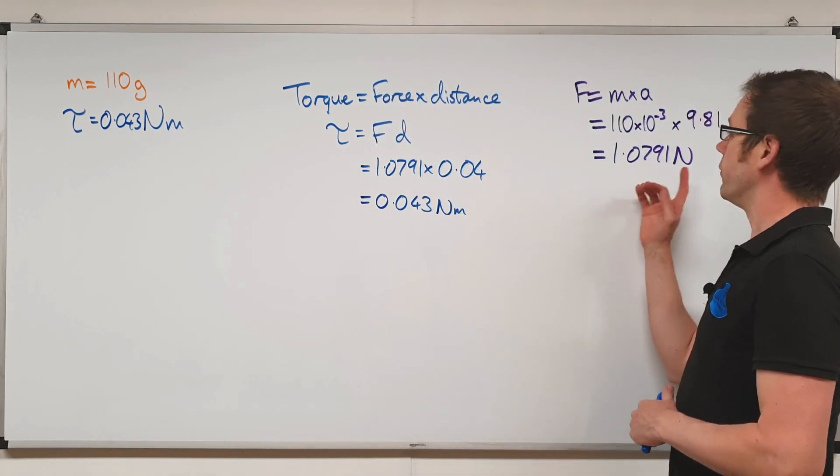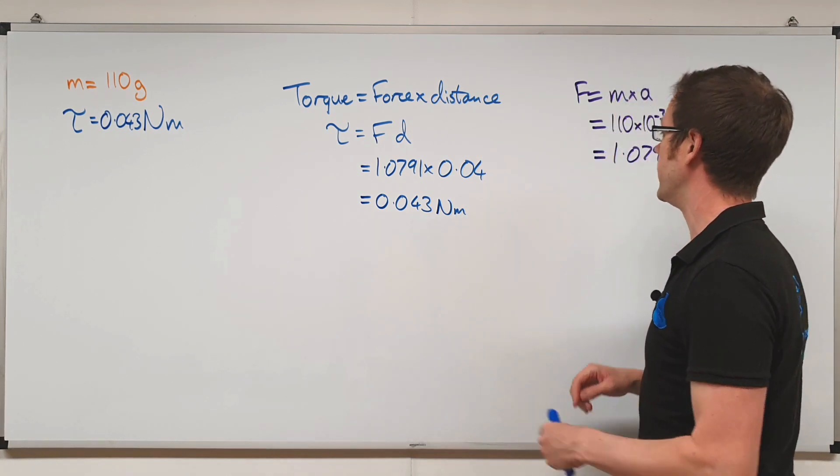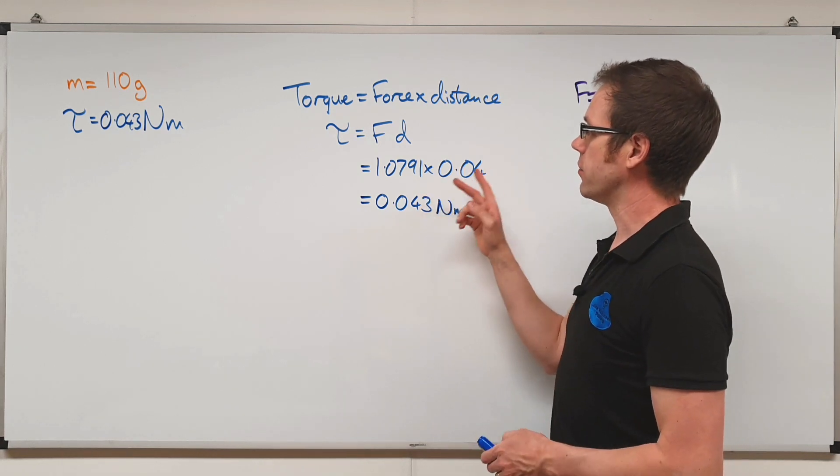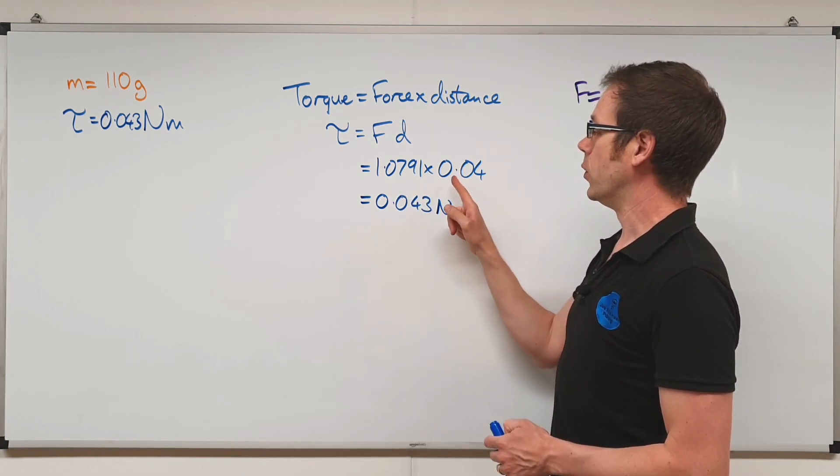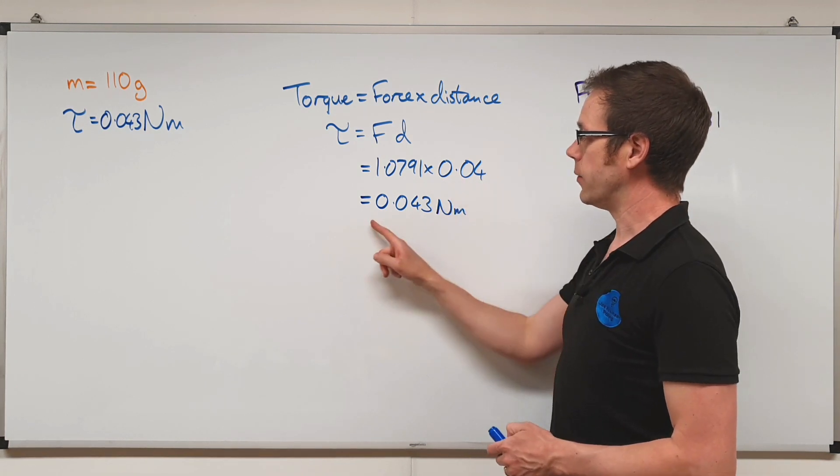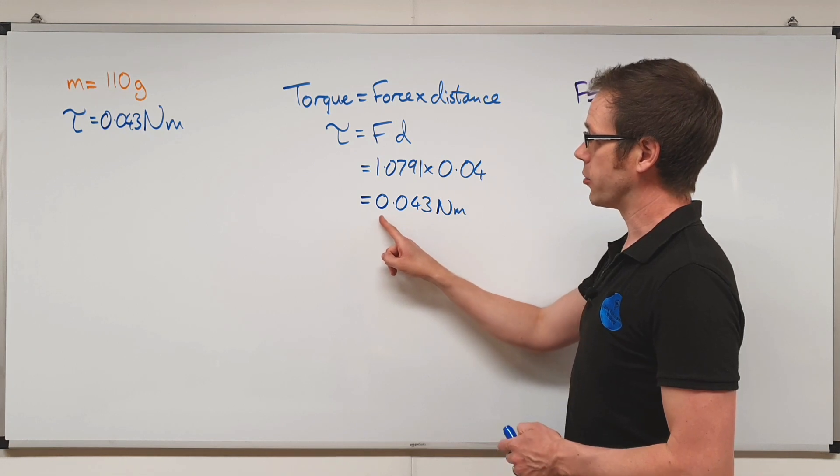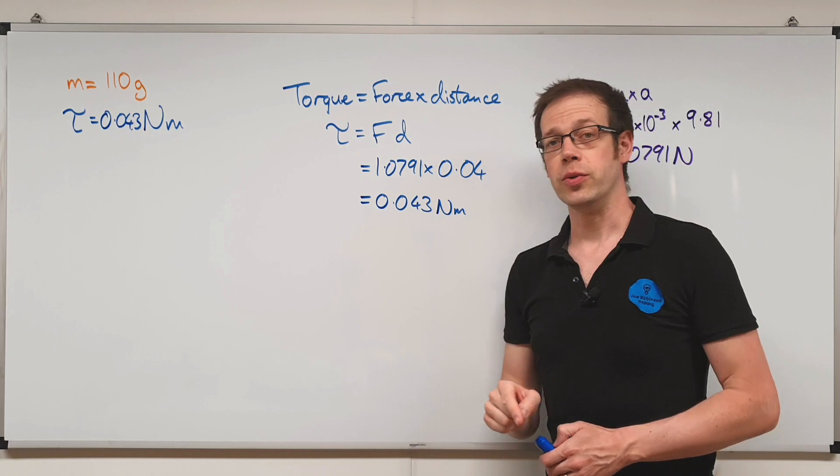We figured out what force it's exerting. We've done that by taking the mass measurement from the scale and converting it into a force reading. And then we times that by the distance from the axis of rotation. So in this case it's four centimeters or 0.04 meters. And when we do that, we find that this motor, once we ran this off, is creating a torque of 0.043 newton meters.